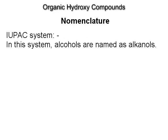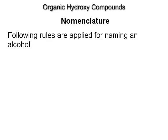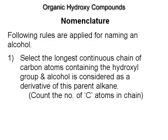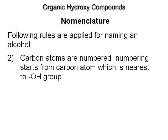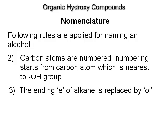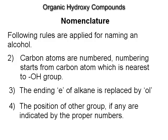In the IUPAC system, alcohols are named as alkanols. The following rules are applied: select the longest continuous chain of carbon atoms containing the hydroxyl group; the alcohol is considered a derivative of this parent alkane. Numbering starts from the carbon atom nearest to the OH group. The ending '-e' of the alkane is replaced by '-ol'. The position of other groups, if any, are indicated by proper numbers.